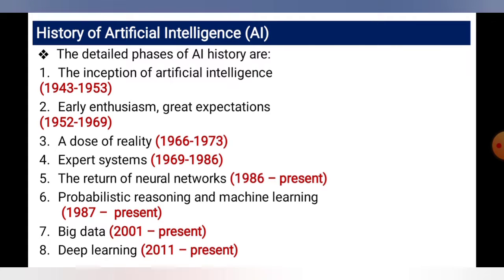The history of artificial intelligence: the inception of AI started in 1943. From 1943 to 1953, AI began. From 1952 to 1969, early enthusiasm and great expectations emerged. From 1966 to 1973, a dose of reality set in. From 1969 to 1986, expert systems were developed. From 1986 to the present, the return of neural networks began.